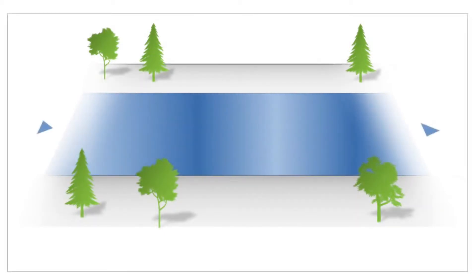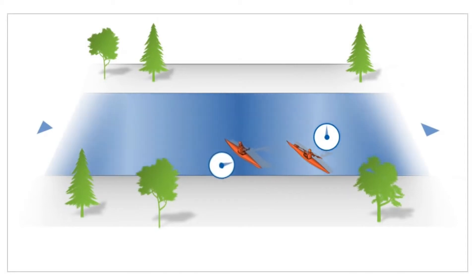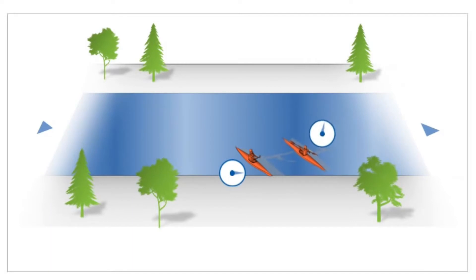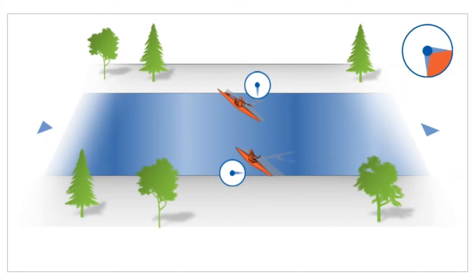Ultrasonic flow measurement with the transit time difference is based on one simple physical fact. Imagine two canoes crossing a river diagonally on the same line — one in the direction of the flow and the other against it. The canoe moving in the direction of the flow needs considerably less time to reach the other riverbank than the canoe moving against the direction of the flow.